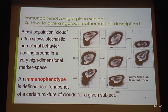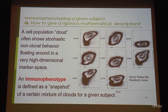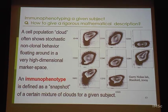A cell population cloud often shows stochastic or non-clonal behavior, floating around in high-dimensional space. If they were a clonal population derived from one single cell, they would peak at the same spot with a simple circular distribution. But all kinds of non-circular, non-elliptical, non-Gaussian distributions are shown — and we can't even visualize what happens in real p-dimensional data. An immunophenotype is defined as a snapshot of a certain mixture of these clouds representing various cell subpopulations for a given subject.